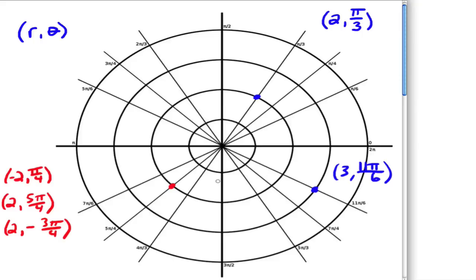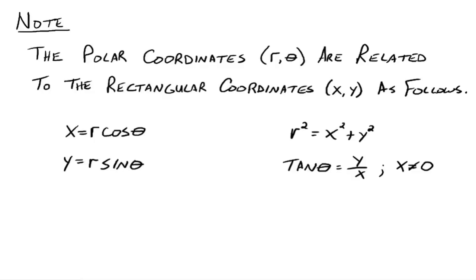Alright, so we'll come back to graphing things here in just a minute. So let's make note that the polar coordinates R theta are related to the rectangular coordinates X, Y in the following way. Well, all that should look familiar, right? X equals R cosine theta, Y equals R sine theta. We've seen that several times. R squared equals X squared plus Y squared. We've seen that several times. And the tangent of theta is Y over X when X is not zero. So really, we're just extending those ideas from before into this new coordinate system.